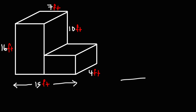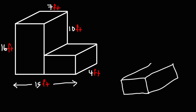So just to recap, let's say if we have a rectangular prism that looks like this. This is the length, this would be the width, and this is the height. The volume of that rectangular prism is the length times the width times the height.